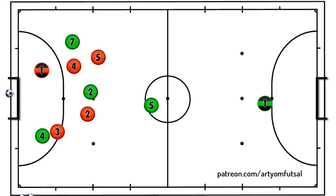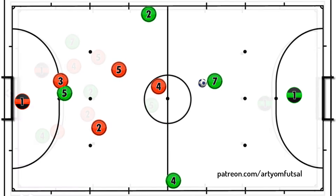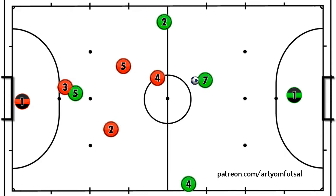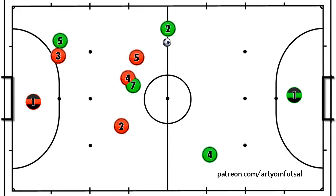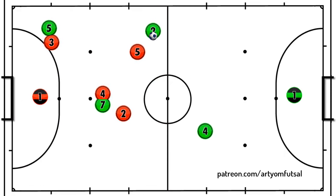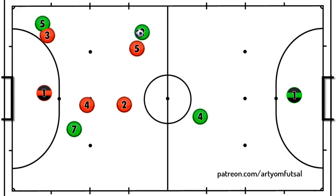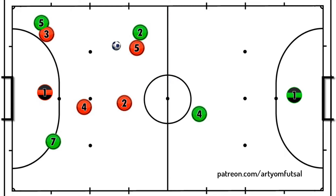Another tactic is the diagonal. This is a combined movement of two players: one player with the ball, and another making a run down the opposite flank, trying to open up by the far post.